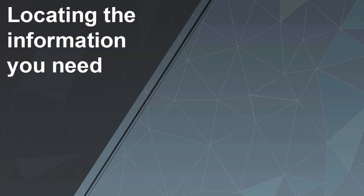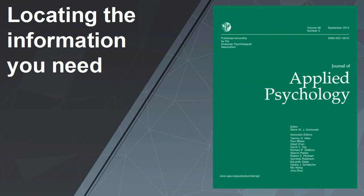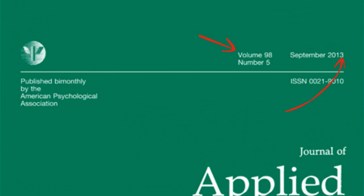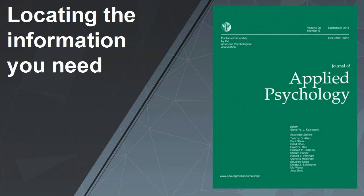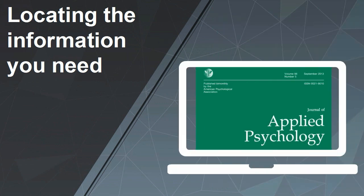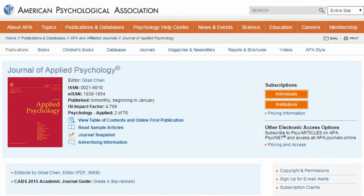Where can you find the above information? For printed journals, you will find most of the information on the cover and within the contents page. For electronic journals, you should click on the appropriate link. For the Journal of Applied Psychology, for example, you click on the link 'View Table of Contents and Online First Publication'.